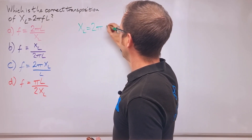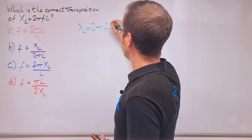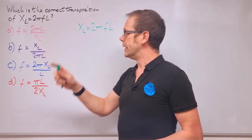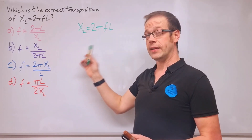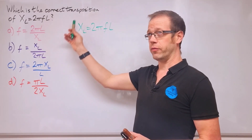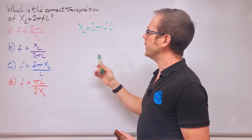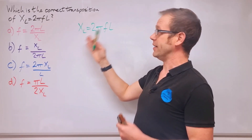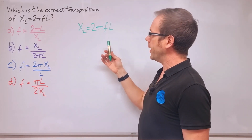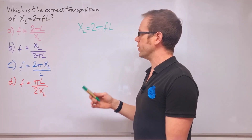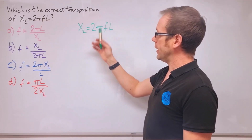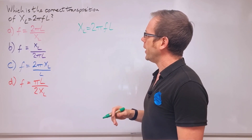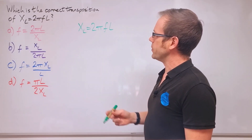This is a formula from electrical science — it's the formula for calculating inductive reactance. You should hopefully have learned a little bit about this so far at Level 2; at Level 3 we'll go into this in much more depth. So check out those videos I've made on this subject because it is quite important and really interesting once you start digging into it. So how would I go about transposing this?